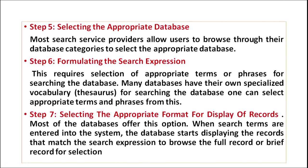Step five is selecting the appropriate database, which is very important. Most search service providers allow users to browse their database categories to select an appropriate database. Step six is formulation of the search expression. This requires selection of appropriate terms or phrases for searching the database. Many databases have their own specialized vocabulary called a thesaurus. Step seven is selecting the appropriate format for display of records. Most databases offer this option. When search terms are entered into the system, the database starts displaying records that match the search expression, allowing browsing of full or brief records for selection.